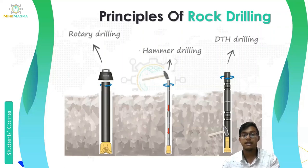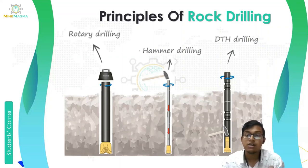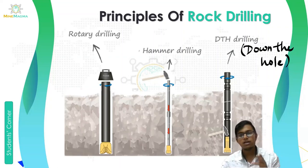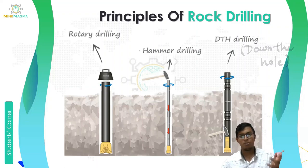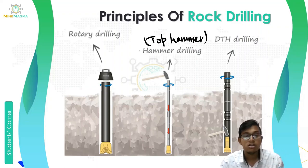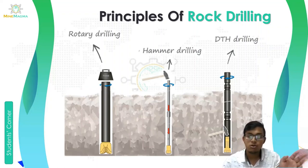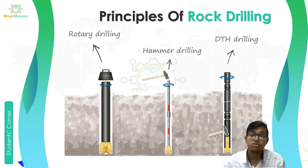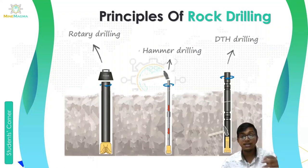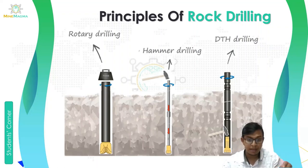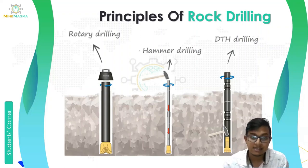Now let's start with the principles of rock drilling. There are three types of drilling: first is rotary drilling, second is hammer drilling, and third is DTH drilling — DTH stands for down the hole drilling. Hammer drilling is also known as top hammer drilling. Rotary drilling was originally used for drilling oil wells but is now used for blast hole drilling. Blast hole drilling is a technique used in mining where a hole is drilled into a surface, explosives are packed in, and then detonated.